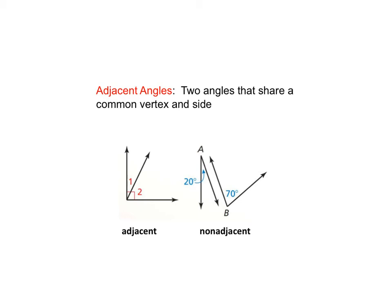In this video we are going to learn adjacent angles. Adjacent means next to each other, side by side. Adjacent angles are two angles that share a common vertex and side.